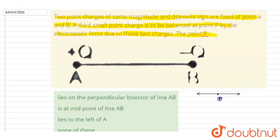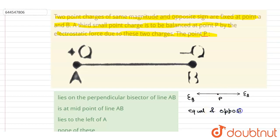The electric field at point P due to charge A and the electric field due to charge B should be equal and opposite. That is the only way by which point P can have zero electric field — equal and opposite electric field.